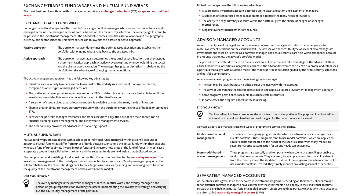Mutual fund wraps are established with a selection of individual funds managed within a client's account. Mutual fund wraps differ from funds of funds because clients hold the actual funds within their account, whereas a fund of funds simply invests in other funds and investors hold units of the fund of funds. In most cases, a separate account is established for the client and the selected funds are held inside that dedicated account. The composition and weighting of individual funds are directed by an overlay manager. The investment management of the underlying funds is conducted by sub-advisors. Overlay managers play an active role by rebalancing the client's holdings back to their target asset mix or by adding and removing funds based on investment management quality or their views on the market.